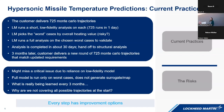In terms of our current practices, the timescale for analysis is roughly about a month, which doesn't blow anyone out of the water efficiency-wise. We also don't necessarily want to miss a critical issue due to reliance on the low-fidelity model, and the full model is only run on the worst cases, so we do not generate a full map. Since the analysis process is currently iterative, what are we really learning every two to three months? And why are we not covering all possible trajectories at the start? All of these gaps point to our motivation to improve.